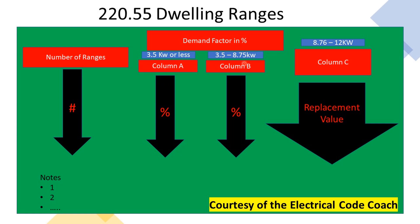Then we have to ask the question: which column am I going to be using — column A, column B, or column C? That is actually decided by the rating of the individual range. If they're all the same kW, and in this case they are both 10kW, we need to take one of them and find out what column we're in. If the range was 3.5kW or less, we would use column A. If the range fell between 3.5 and 8.75kW, we would use column B. Our range is 10kW, and it falls in between the values for column C, so we need to use column C throughout this entire process.